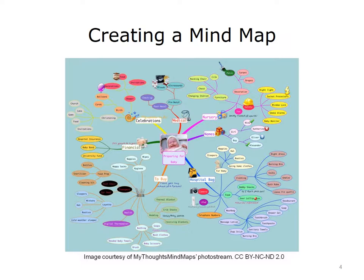This sure looks like a busy screen — don't let the detail confuse you. If you need to, enlarge the mind map image so that you can see the detail. Pictured here is an image of a mind map created as someone began to plan for the birth of a child. The main concern is positioned in the center and is labeled 'preparing for baby.' Major trunks or large tasks associated with a baby, such as supplies for the hospital bag, things to buy, financial considerations, celebrations to plan, and so on, branch out from the center.